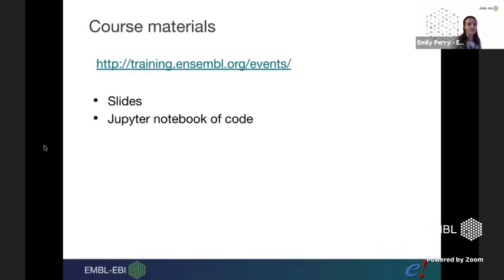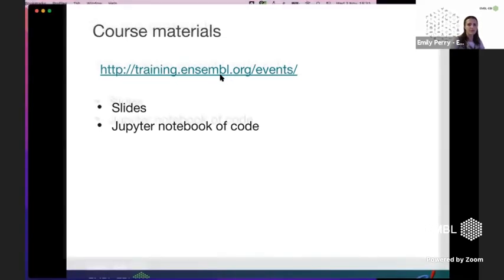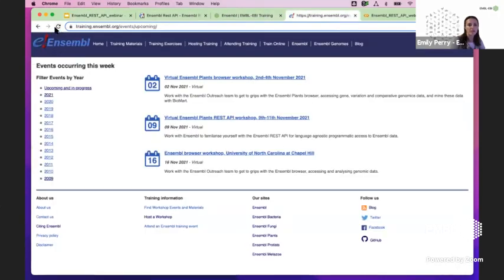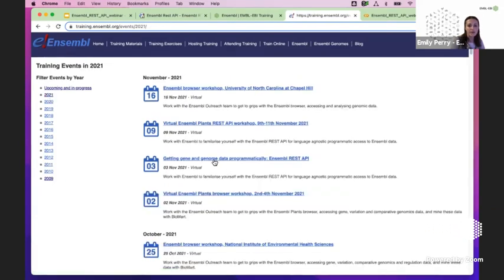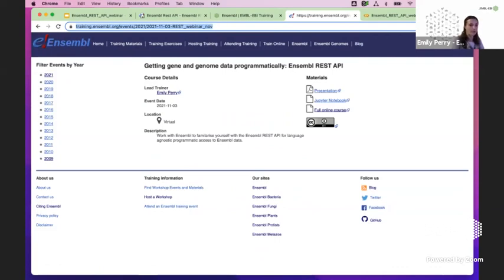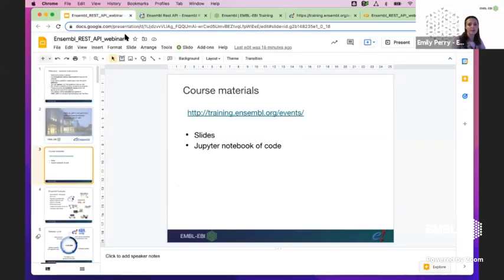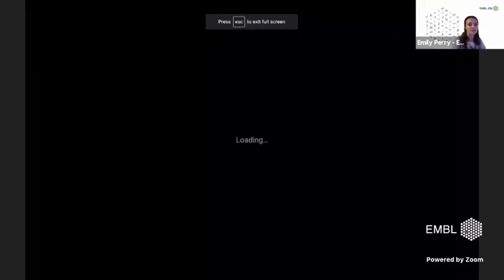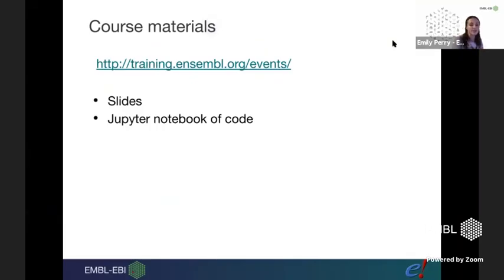Everything you're going to need for this course — if you go to training.ensembl.org/events — you'll find there. If you want to follow along with the slides, you can, though there's no necessity to do so. There's also code in a Jupyter notebook, and you can find a copy of that there as well.